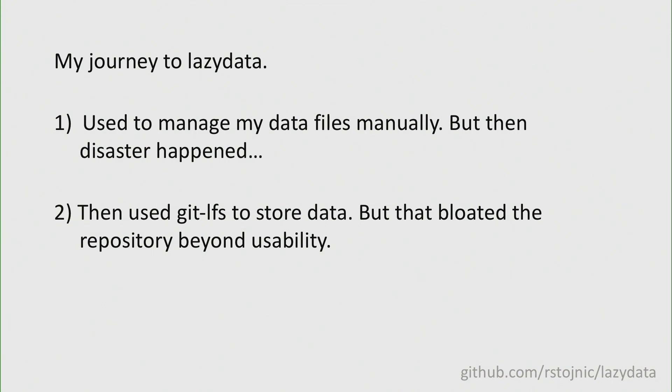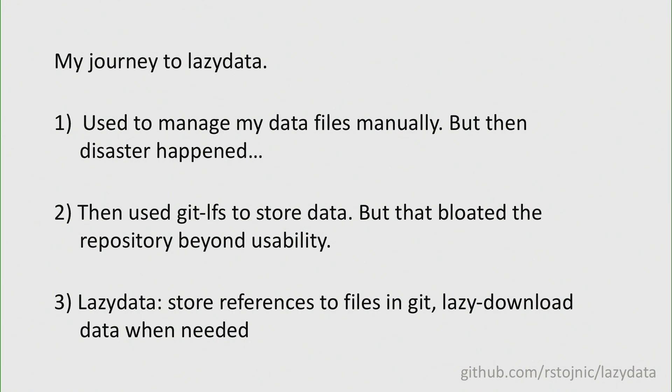I was sufficiently annoyed to say, well, we need a new solution, and actually sit down and try to write it. That's how lazy data was born. The idea is essentially we want to store references to files in Git so we still get the benefit of versioning everything, but we don't want to pull the data automatically. We want to be able to programmatically lazy load it whenever we need it. That enables us to treat our storage backend as a black hole — you just put everything there and get files as you need them.